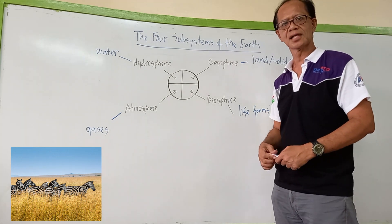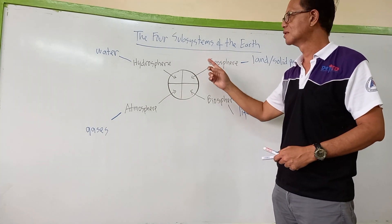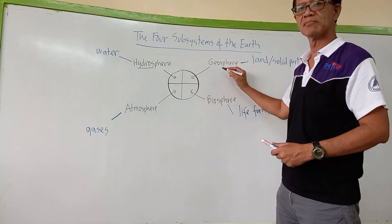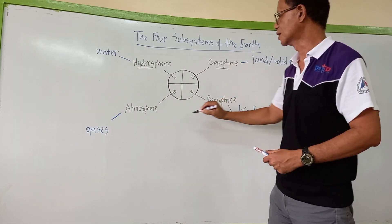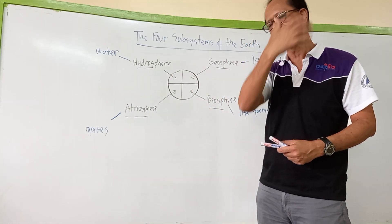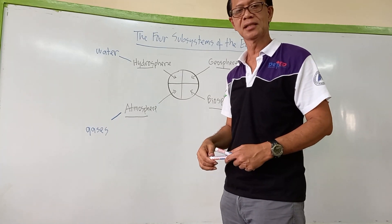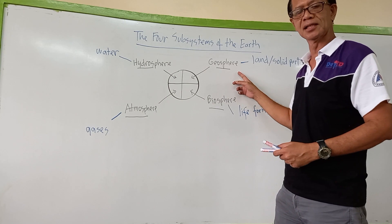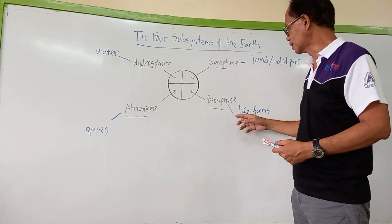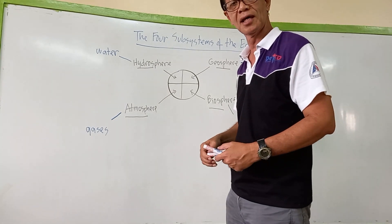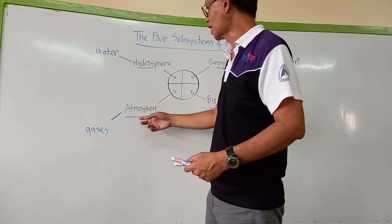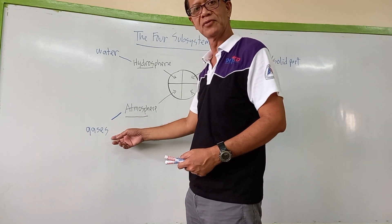So we have four subsystems: first is the hydrosphere, then we have the geosphere, biosphere, and atmosphere. In the hydrosphere we have water, in the geosphere we have the solid part of the planet, in the biosphere this is the part where we can find life forms, and in the atmosphere this is the part where we can find gases.